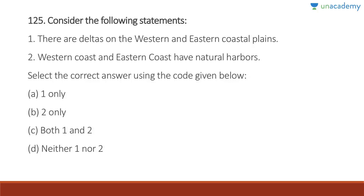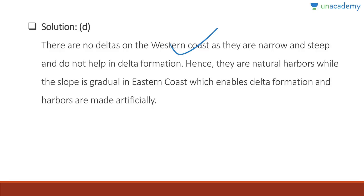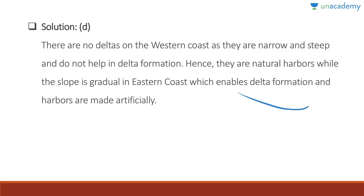Question 125: There are deltas on both the western and eastern coastal plains — wrong. The western and eastern coasts both have natural harbors — also wrong. There are no deltas on the western coast as it is narrow and steep and does not help delta formation — hence the western coast has natural harbors. The eastern coast has a gradual slope enabling delta formation, and harbors there are made artificially.